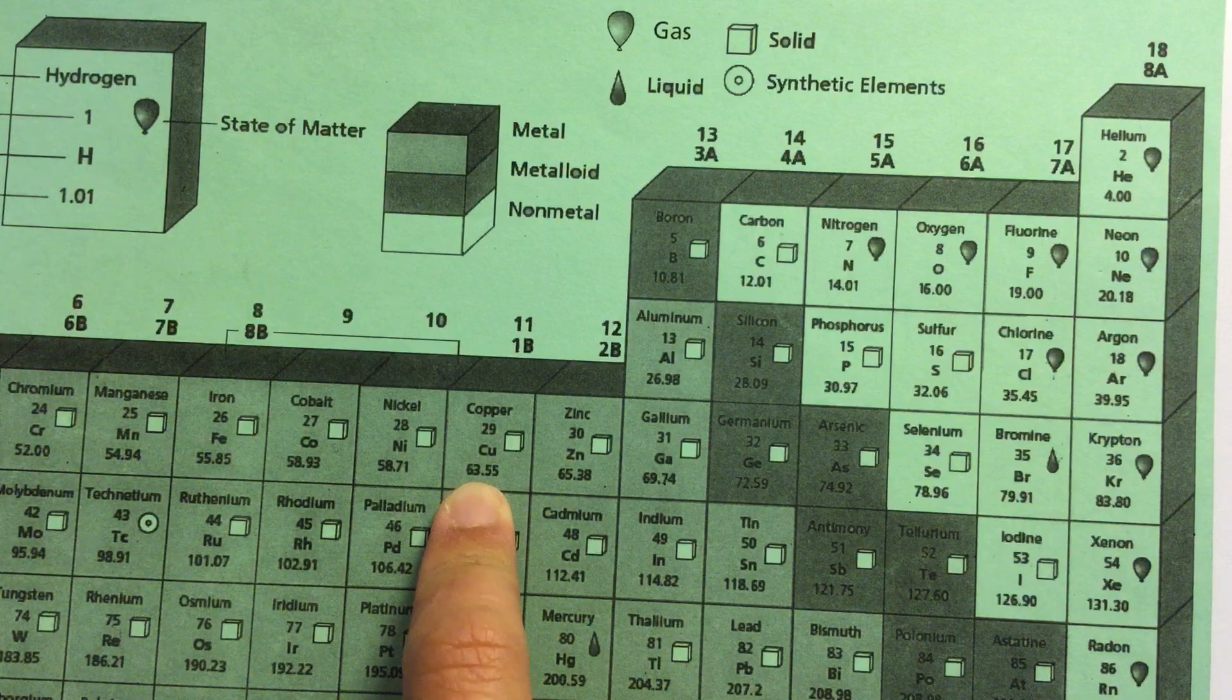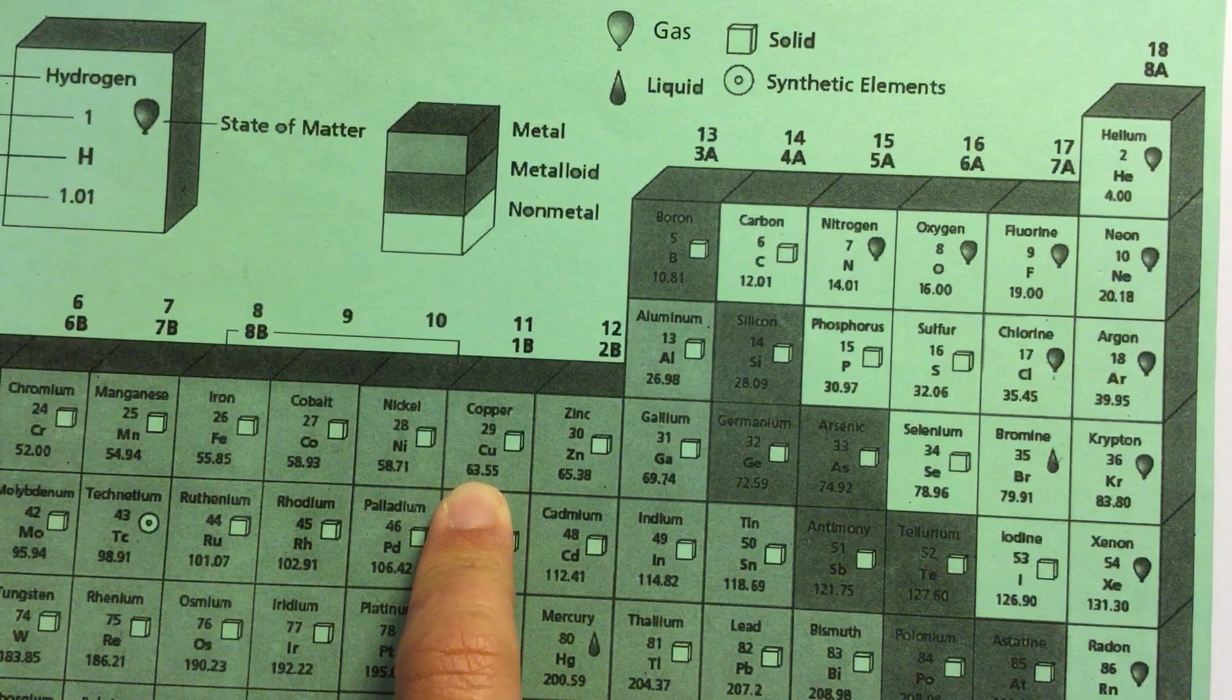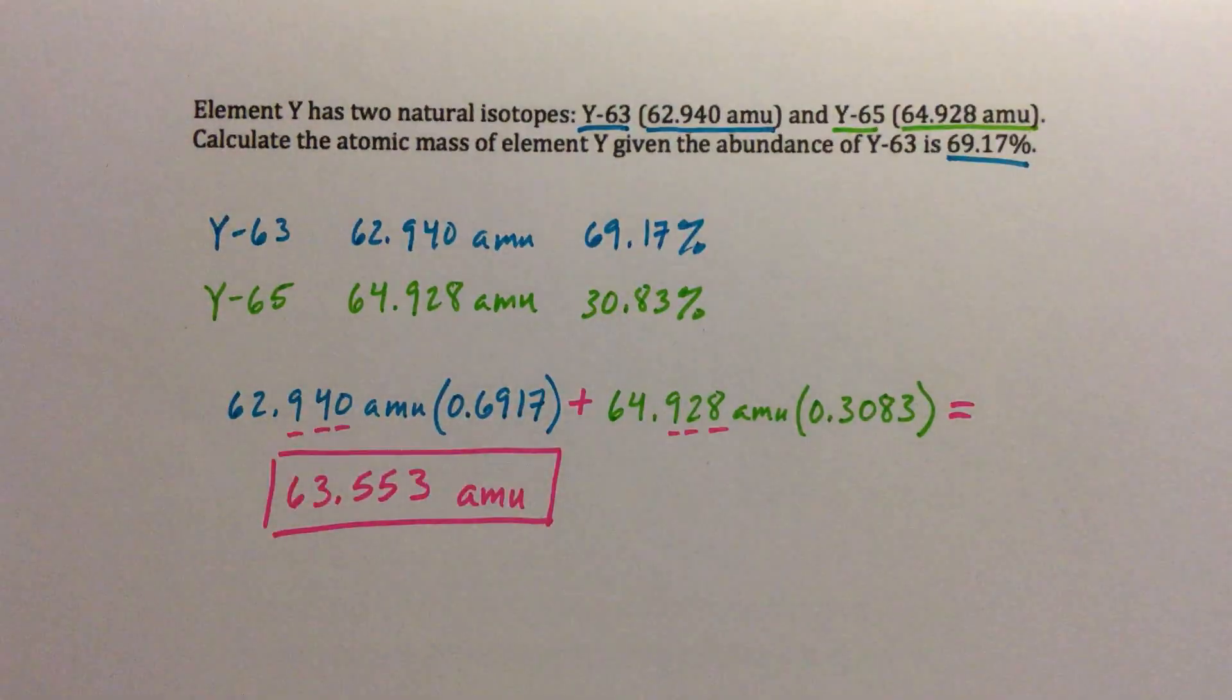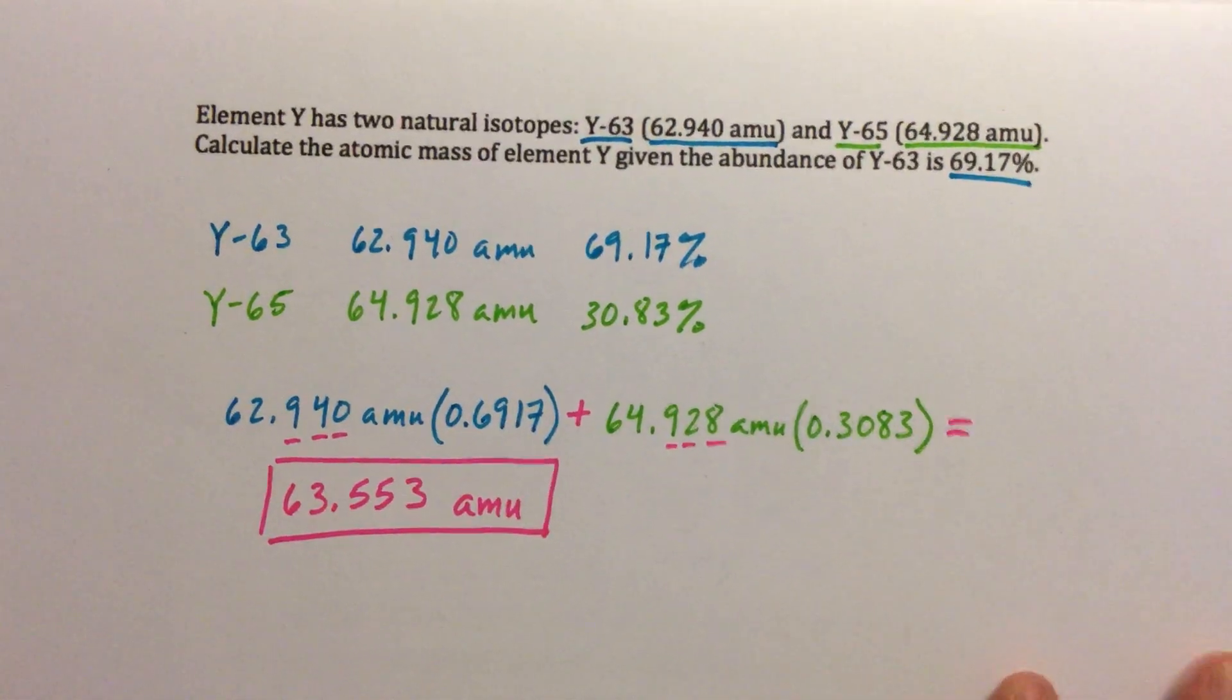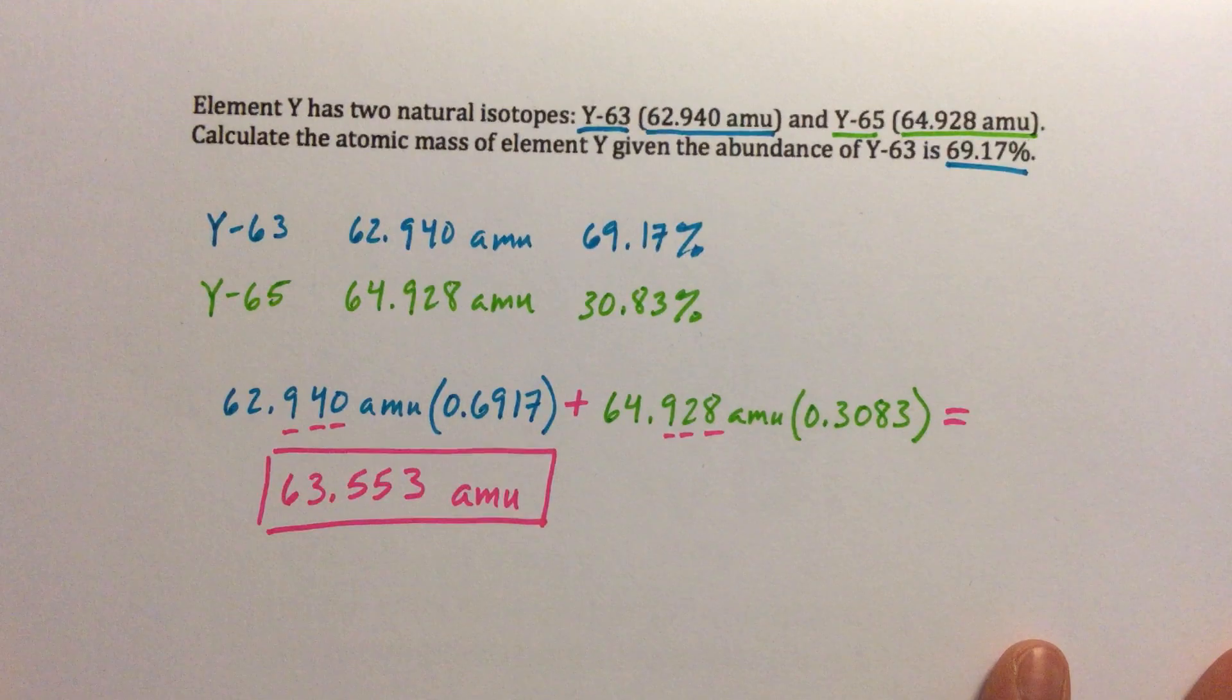Really close to our answer of 63.553, so if a question were to ask what element do you think it is, then you could say it's probably copper. Atomic mass is very, very close to copper.